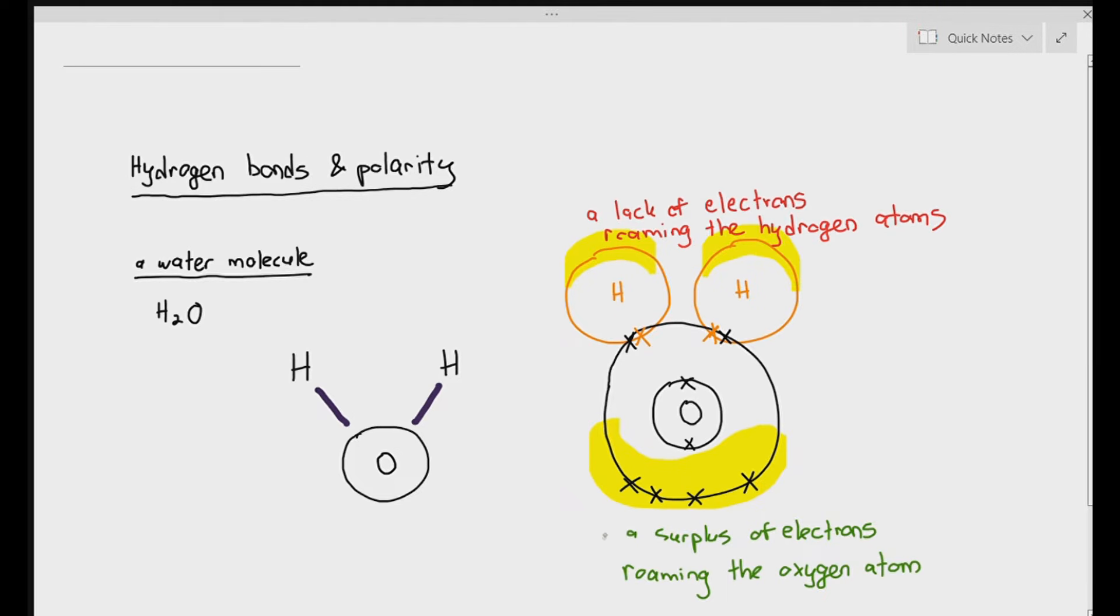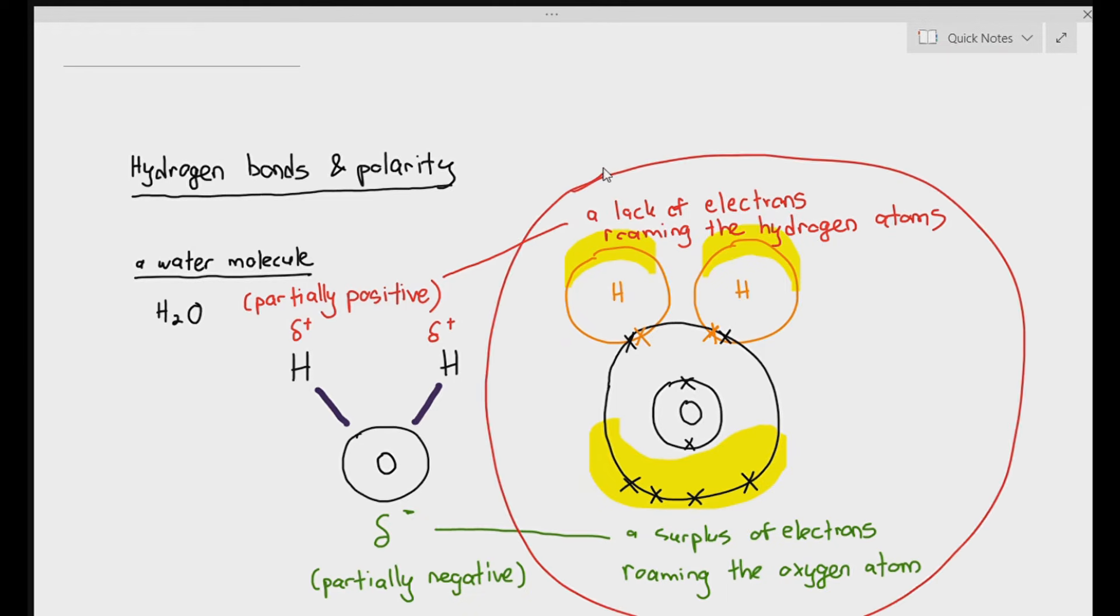The consequence of this is it makes oxygen now have a partially negative charge, or the symbol that I have just drawn there is a delta negative. And the hydrogen end, due to its lack of electrons at the top, will have a partially positive charge or a delta positive charge. It's not to be confused with ionic charges. This is just a very weak partially positive or weak partially negative charge.